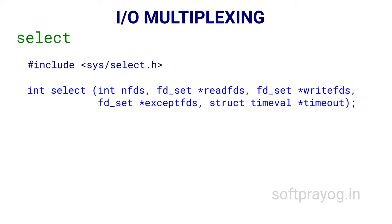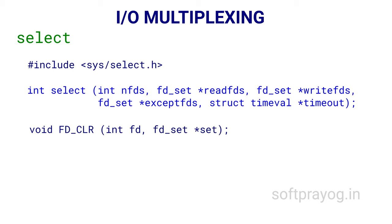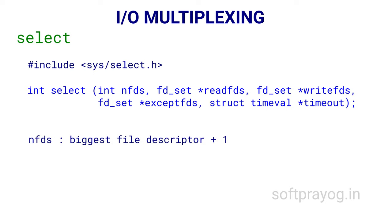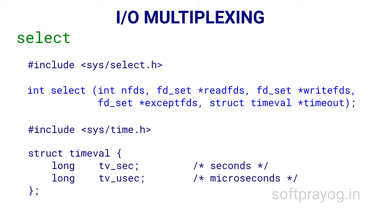Now we look at the select system call. Select operates on a set of file descriptors. It takes three sets of file descriptors as arguments: read FDs — a set of file descriptors to be monitored for read operations; write FDs — the set to be monitored for write operations; and except FDs — the set to be monitored for IO exceptions. Any of the pointers to the sets can be null and that set is ignored. There are macros to manage the file descriptor sets: FD_CLR clears an FD from the set, FD_ISSET tells whether an FD is part of the set, FD_SET sets the FD in the set, and FD_ZERO initializes the set. The first parameter nfds is the largest FD in the sets plus one. The last parameter timeout is in seconds and microseconds. Select returns when one or more file descriptors are ready for IO or the timeout has occurred.